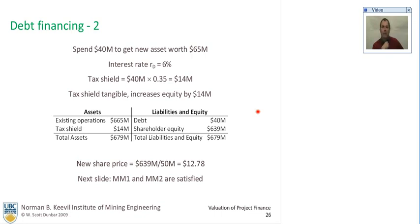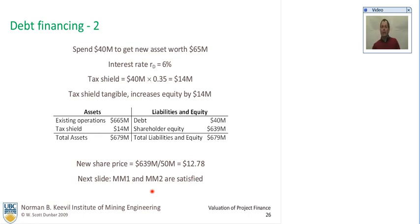You spend the $40 million to get the new asset worth $65 million. The interest rate is 6%. The tax shield is the debt times the tax rate of 35%, which is $14 million. So now you've got a tax shield as an asset. Total assets are now $679 million. The debt is $40 million, shareholder equity is $639 million ($625 plus $14), and the new share price is $12.78. There is a bit of leverage — a return to equity caused by issuing debt — so you get a slightly higher return to equity, which is the added advantage of this tax shield.